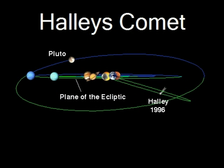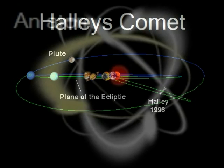The orbits of the Moon and of artificial satellites of the Earth are also elliptical, as are the paths of comets in permanent orbit around the Sun. Halley's Comet takes about 76 years to travel around our Sun. Edmund Halley saw the comet in 1682 and correctly predicted its return in 1759. Although he did not live long enough to see his prediction come true, the comet is named in his honour.